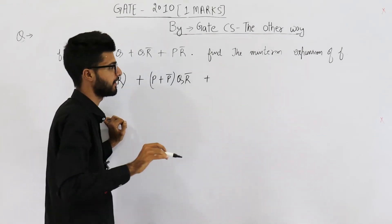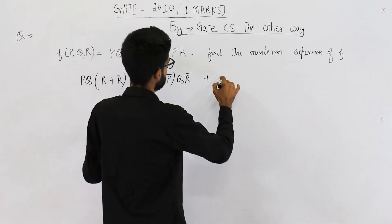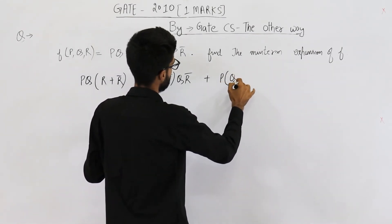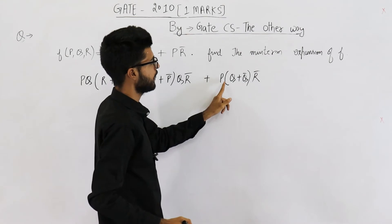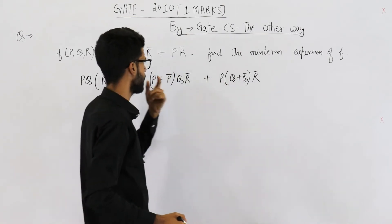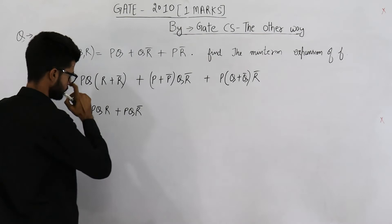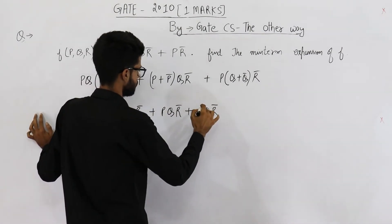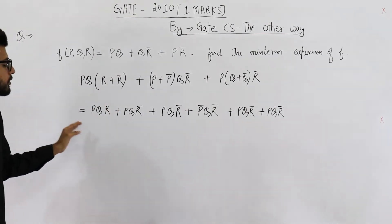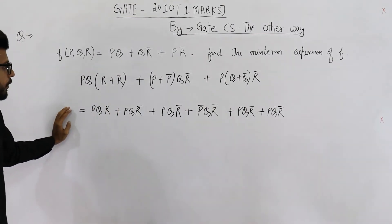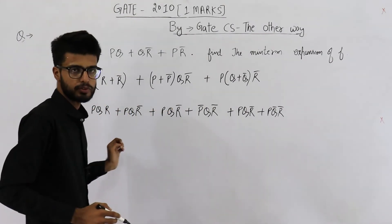Rather I must say and it. So it is p into q plus q bar to r bar. So this is p and q plus q bar and r bar. So upon opening these brackets you will get this. Now these are all the minterms.